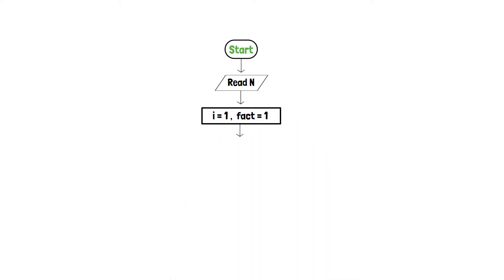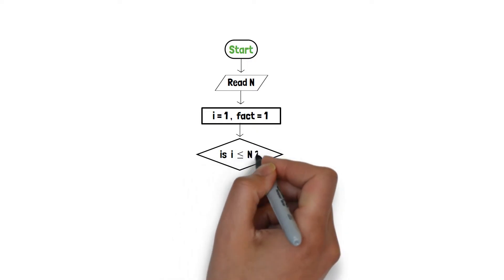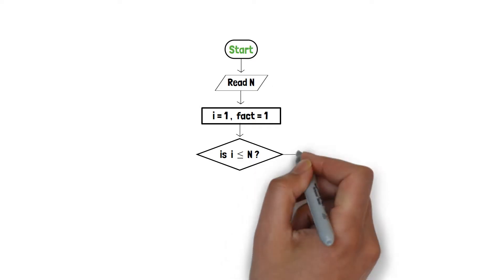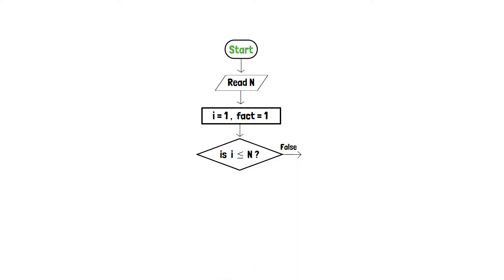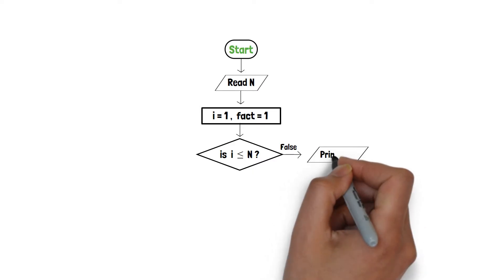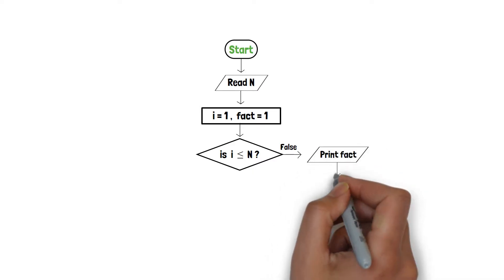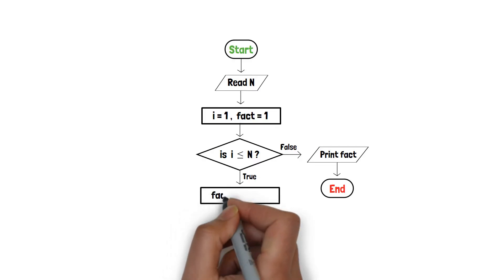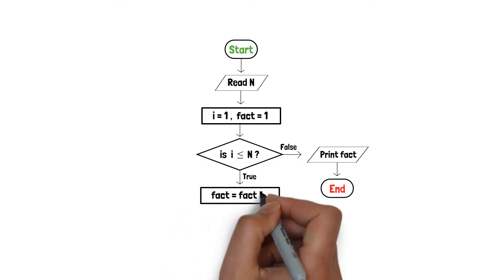Let's say i is equal to 1 and fact is equal to 1. Moreover, we will add a decision box to check if i is less than or equal to n or not. If i is greater than n, then we will print the variable fact through an output component and end the program via end terminator. But if i is less than or equal to n, then we will implement a process box in which the variable fact is incremented by i times. That is, fact is equal to fact multiplied by i.